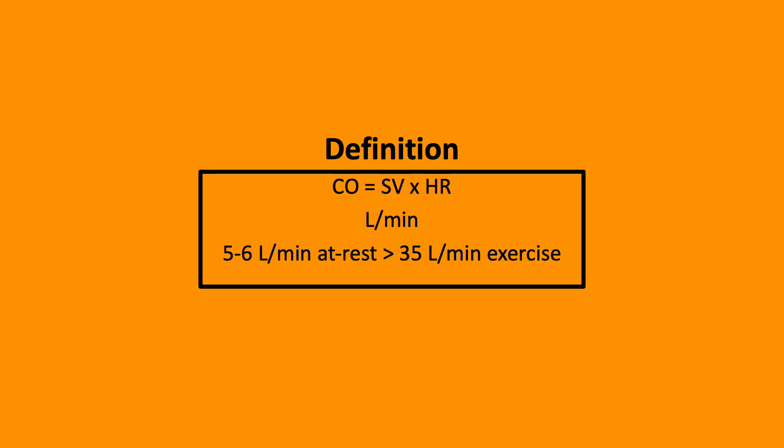Cardiac output is equal to stroke volume multiplied by heart rate. It's usually measured in liters per minute and at rest it can be five to six liters per minute, and during exercise it can be over 35 liters per minute.